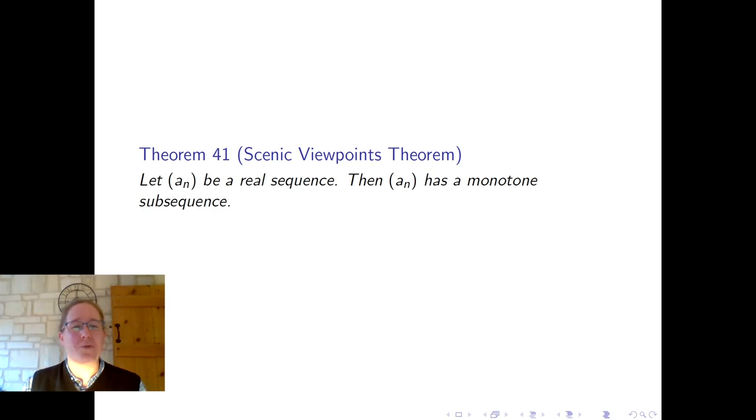And we're going to do that by starting with something called the Scenic Viewpoints Theorem. It's a maybe unusually poetic name, but I will draw you a picture in a moment that will hopefully help to explain it. What it says is that if the sequence a_n is a real sequence, then it has a monotone subsequence. And remember, monotone means increasing or decreasing. And you might already be thinking ahead to, well, what would that tell us about bounded sequences? But we won't rush ahead just now. We'll prove the Scenic Viewpoints Theorem first.